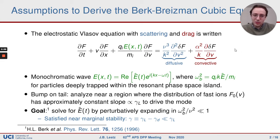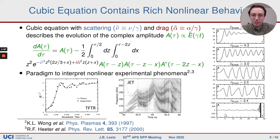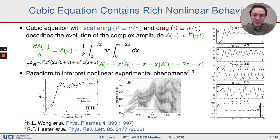The first approximation you can make is that the bounce frequency of resonant fast ions is much less than the scattering frequency. This is what Burke and Breisman did in 1996 to derive the cubic equation, which effectively decouples the evolution of the mode amplitude A from the perturbation f. This is great progress, but it's still a very complicated equation requiring a computer. All of the collisional dynamics are contained within the kernel of the integral, and the time delays within the mode amplitude make analytic progress difficult.